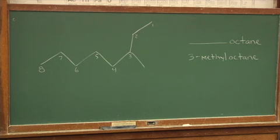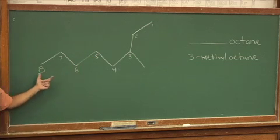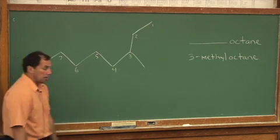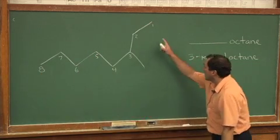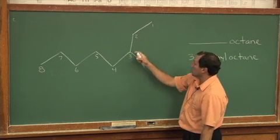Now on carbon number three, we have a branch. Notice that I didn't start numbering from the left because we need the lowest numbering system possible. So if I number from the right, the branch occurs off of carbon number three.